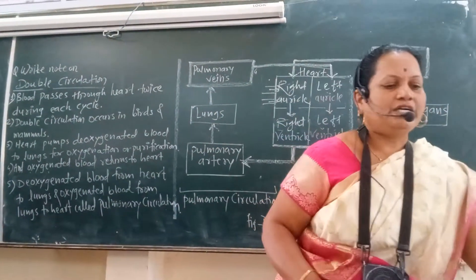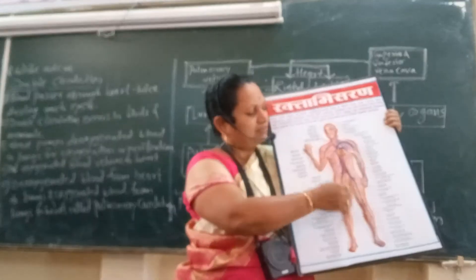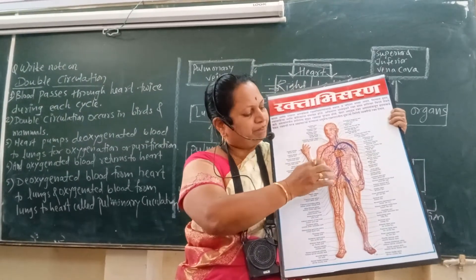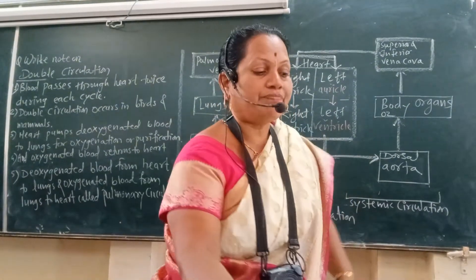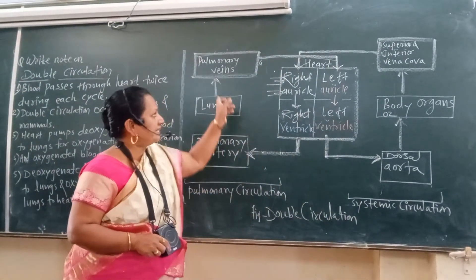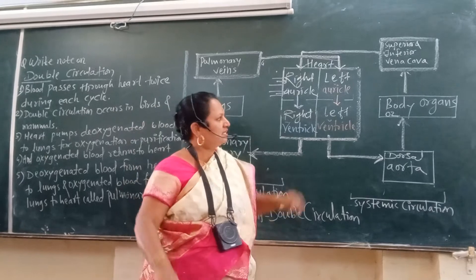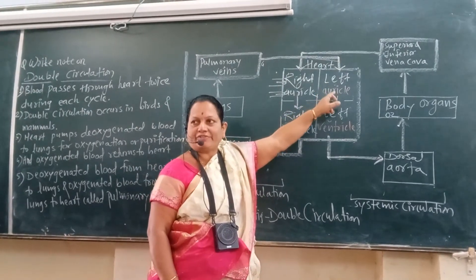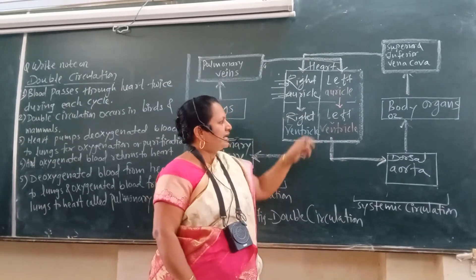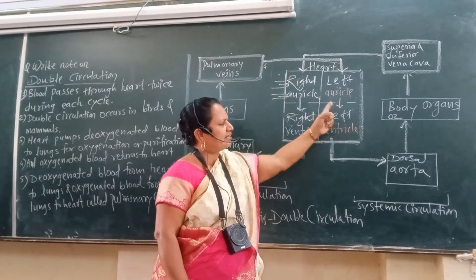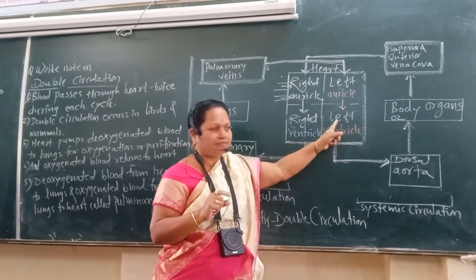That oxygenated blood from the lungs is carried towards the heart through the pulmonary veins. Into which auricle? The left auricle. The left auricle receives oxygenated blood, and from the left auricle, when it contracts, that oxygenated or pure blood enters into the left ventricle.